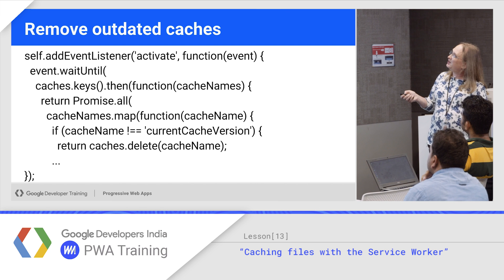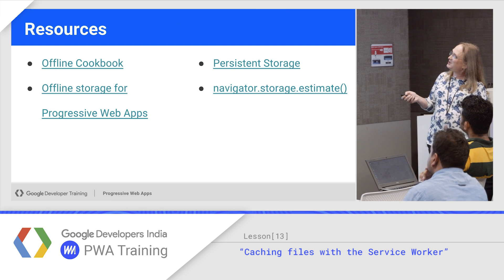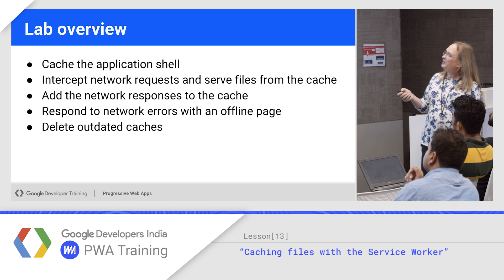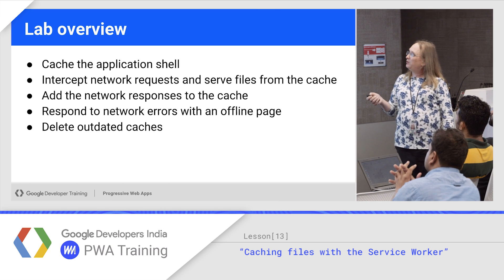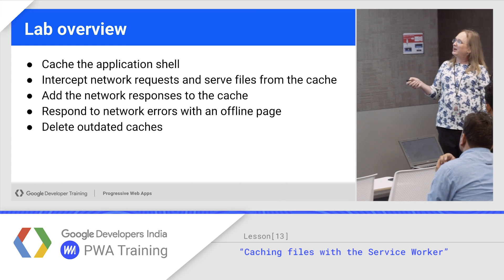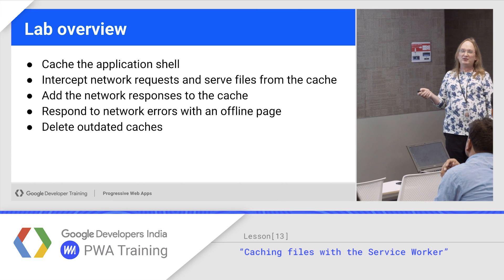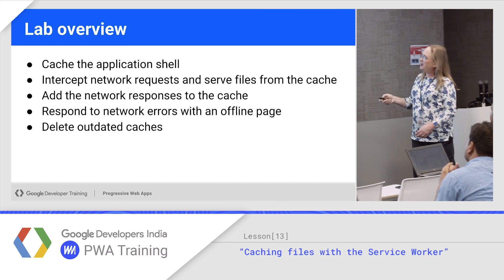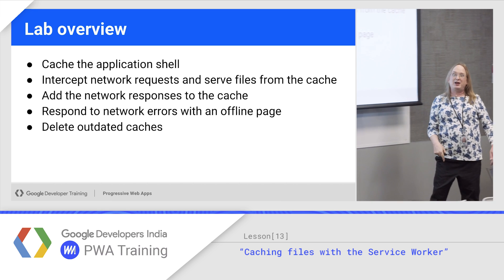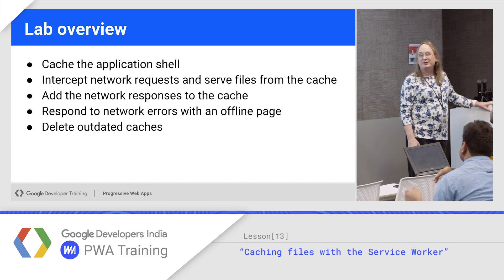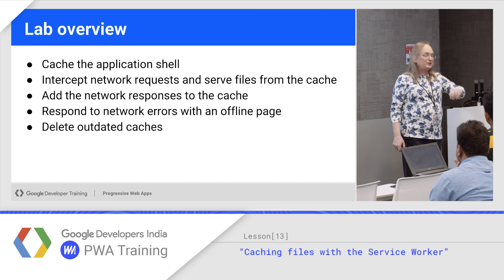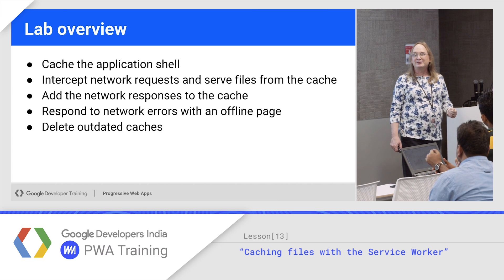We've already looked at updating caches — there's the list of resources, and here's the lab. We're going to have you build manually a lot of the stuff you were doing in toolbox yesterday, but the interesting one is responding to network errors with an offline page — that'll be a new technique for you. Go ahead and start the fetch lab, and I'll be back with you in about half an hour.